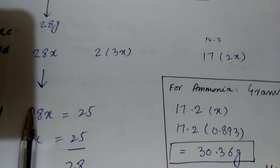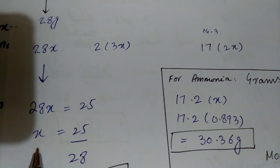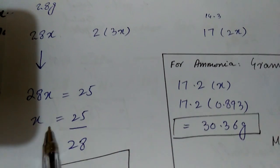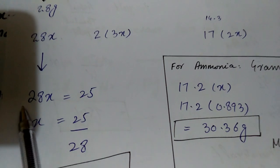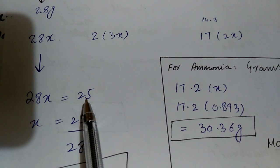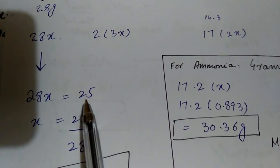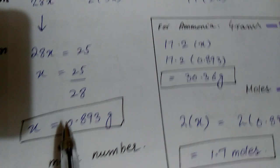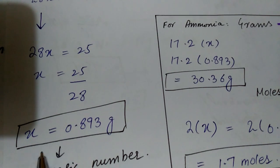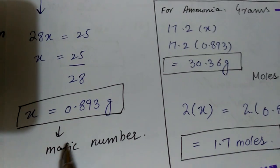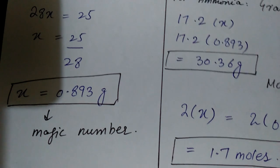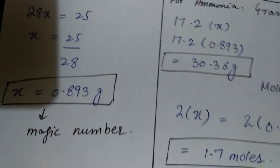We will write down the given mass so we can find the value of x. We have 28x which equals 25 grams (the given mass). So x equals 25 divided by 28. This value of x is called the magic number. We have now found the magic number very easily.